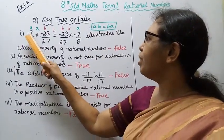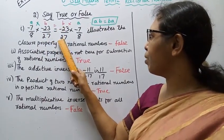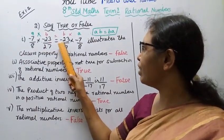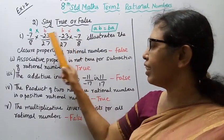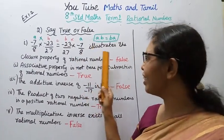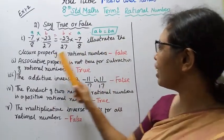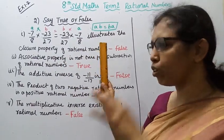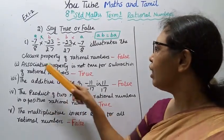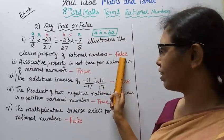First subdivision: minus 7 by 8 into minus 23 by 27 equals minus 23 by 27 into minus 7 by 8. This is A into B equals B into A, which illustrates the Commutative Property. This does NOT illustrate the Closure Property of Rational Numbers - that answer is False. It illustrates the Commutative Property.